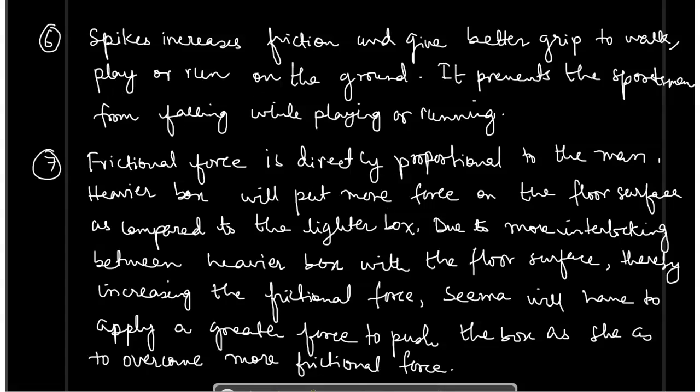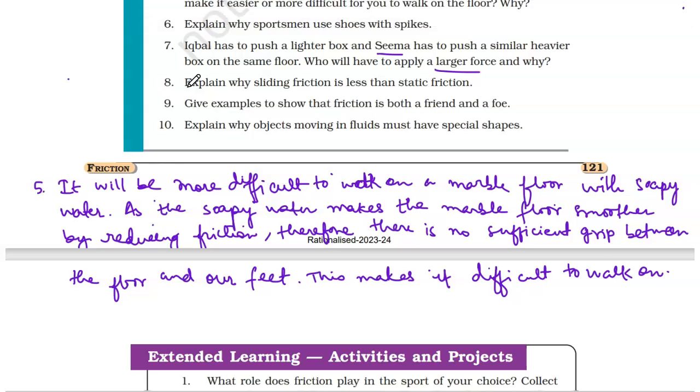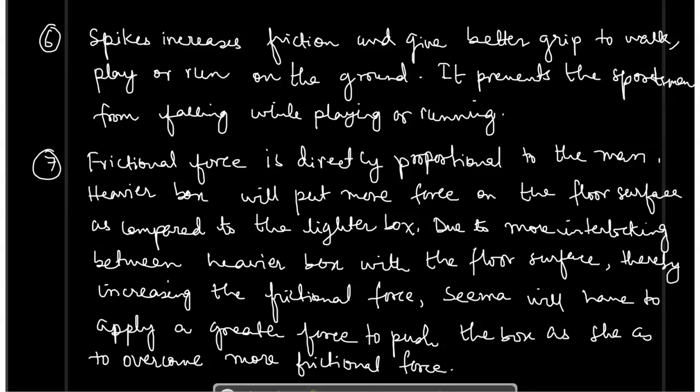Now let us go to the next question. Question number eight: explain why sliding friction is less than static friction. So now, why is sliding friction less than static friction? Remember, when the objects are at rest, the interlocking of irregularities between the two surfaces is higher than when the object is moving. So if the interlocking will be more, greater will be the friction.